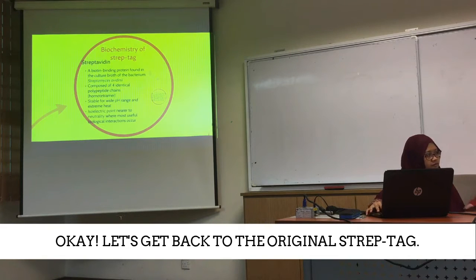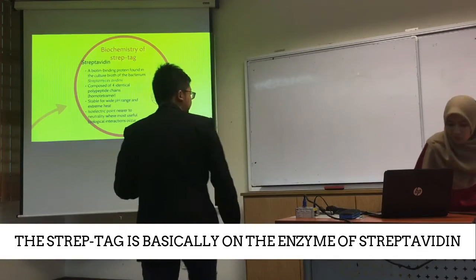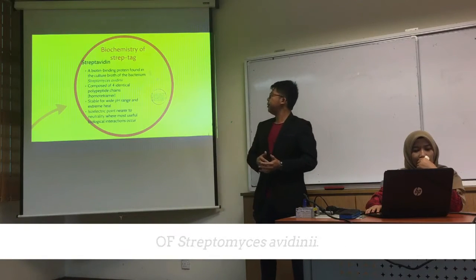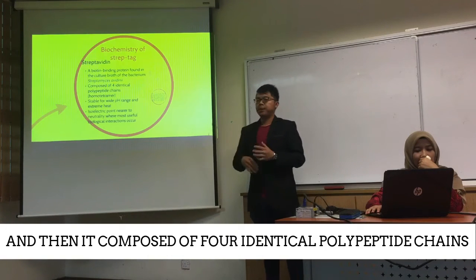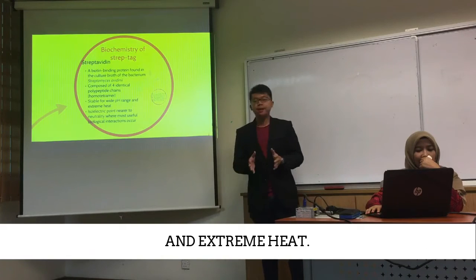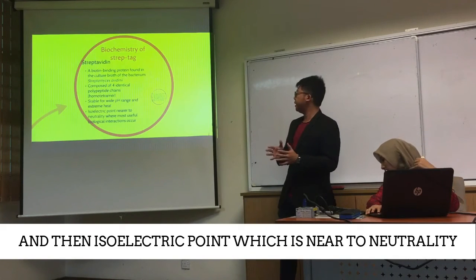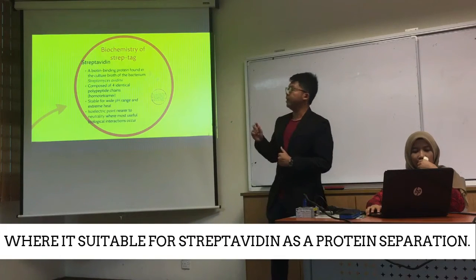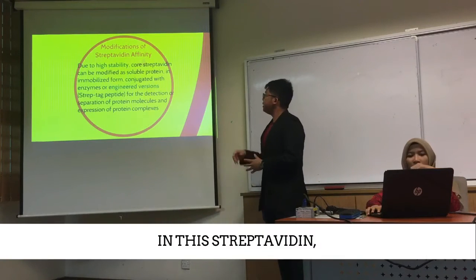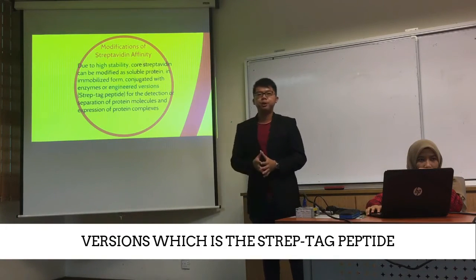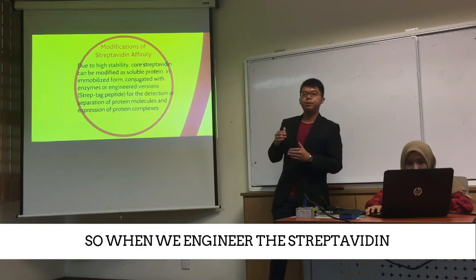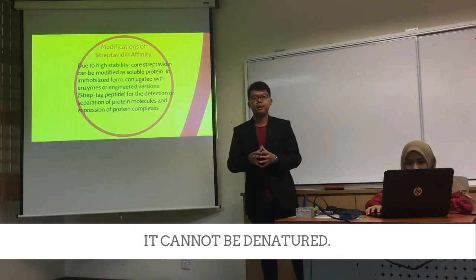The strep tag is basically based on streptavidin, which is the basis of the strep tag. It is a protein produced by the bacterium Streptomyces avidinii. It is composed of four identical polypeptide chains and is stable over a wide range of pH and extreme heat. It has an isoelectric point near neutrality, which is very suitable for strep tag XT as a protein separation tool. In strep tag XT, it is modified into an engineered version called strep tactin, so that it can be used to purify any protein. Due to its high stability, when we engineer strep tag XT into strep tactin, it will not be denatured.